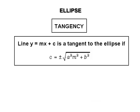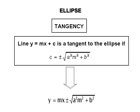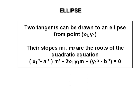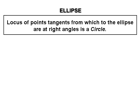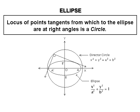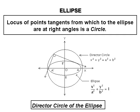Thus there are two tangents having slope m to the ellipse, with equations y equal to mx ± √(a²m² + b²). In general, two tangents can be drawn to the ellipse from a point (x₁, y₁) in the same plane. Their slopes m₁ and m₂ are roots of the quadratic equation (x₁² − a²)m² − 2x₁y₁m + (y₁² − b²) equal to 0. The locus of points from which tangents to the ellipse are at right angles is the circle x² + y² equal to a² + b², called the director circle of the ellipse.